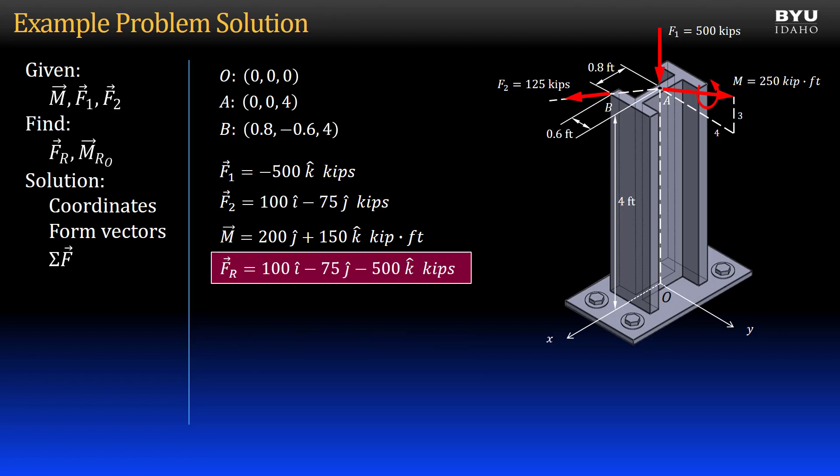Now, we get the resultant moment vector by summing moments at point O. Remember that each force may contribute to the moment. My equation, then, is the sum of the moment caused by force 1, the moment caused by force 2, and the free moment vector at point A. Note that the line of action of force 1 passes through point O. The position vector, R, would then be 0, so it contributes no moment.